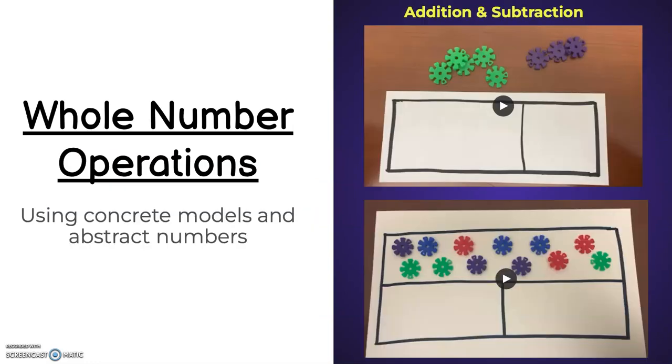Let's take a look at what this would look like with whole number operations. So you can see here there is an addition and subtraction model that we are using concrete objects on a physical tape model. Students are manipulating, looking to see those relationships. In the top one you can even see we started investigating the concept of the size, the proportion of the parts when we investigate that tape model.